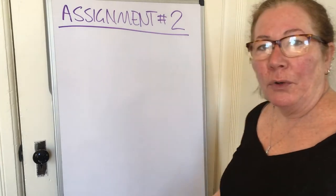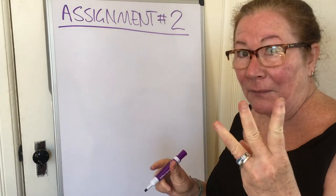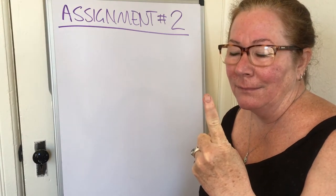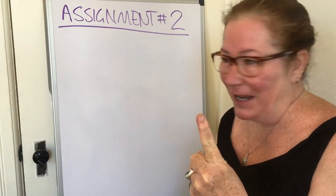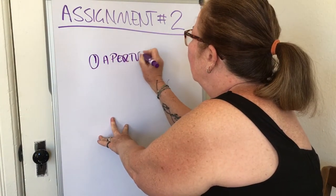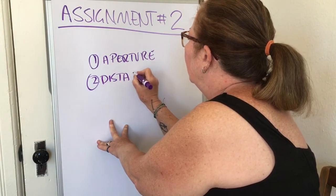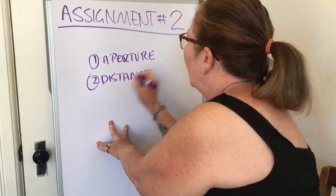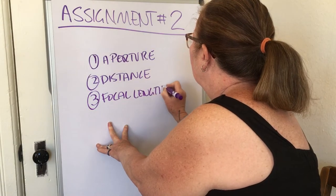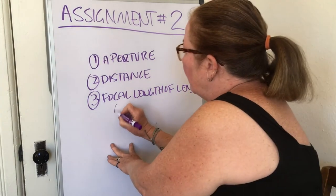From my previous lecture we talked about the three things that affect depth of field. Very important to know what they are. Number one is aperture, two is the distance of photographer to subject, and three is the focal length of the lens — remember, that's lens size.